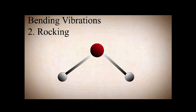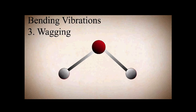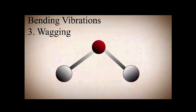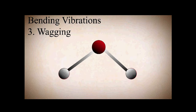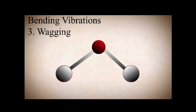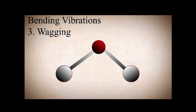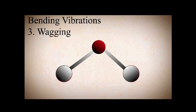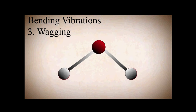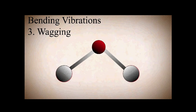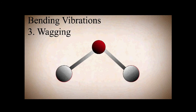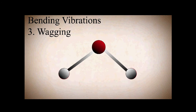If you compare these two with wagging vibration, you can see both atoms are coming towards us and simultaneously both atoms are going far from us — meaning they are not in one plane. That is why wagging vibration is an out-of-plane vibration. You can clearly see that both atoms simultaneously coming towards us causes a disturbance of the plane.